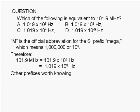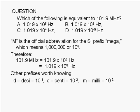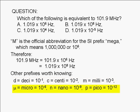Here are some other SI prefixes that are quite commonly used. You should know these by heart. Deci is 10 to the negative 1, centi is 10 to the negative 2, milli is 10 to the negative 3, micro is 10 to the negative 6, nano is 10 to the negative 9, and pico is 10 to the negative 12.